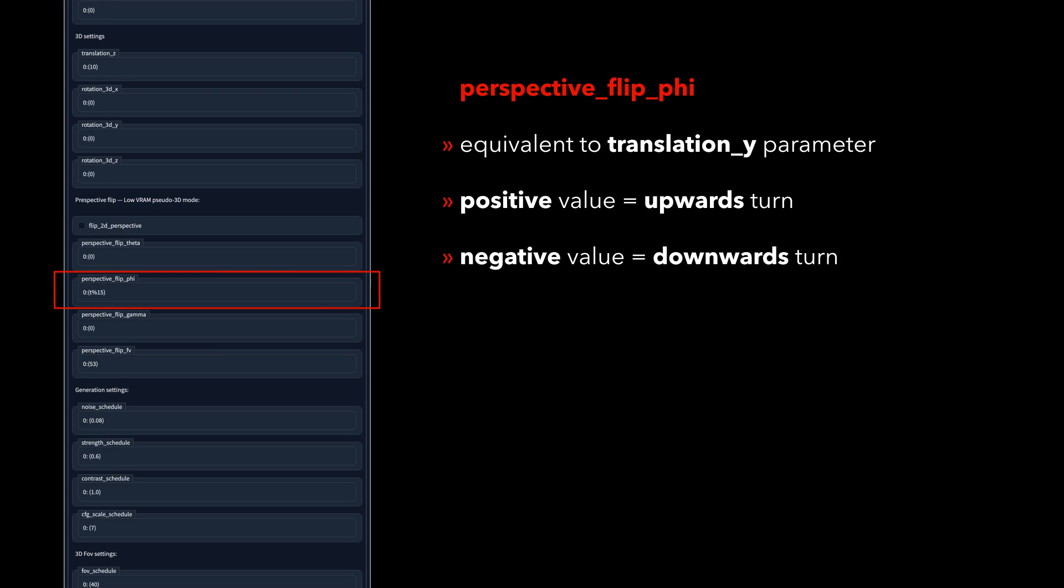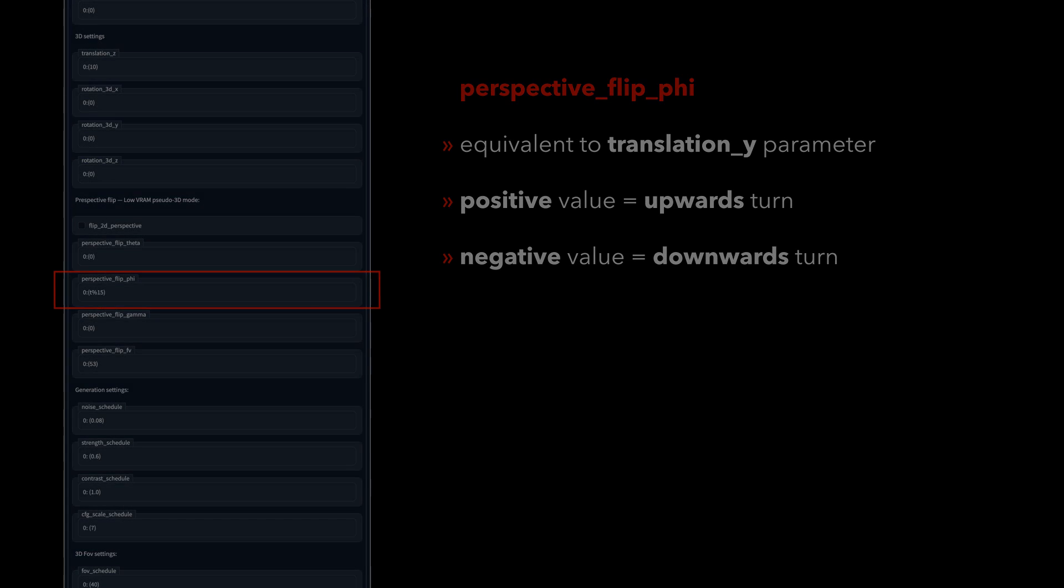Phi influences the perspective change on the y-axis, a positive value raises the camera, and a negative value lowers it.